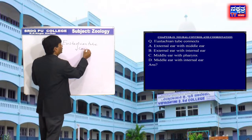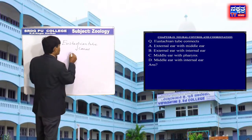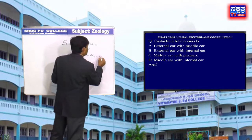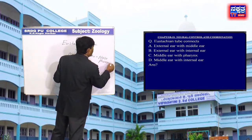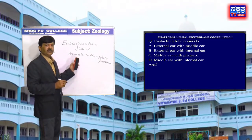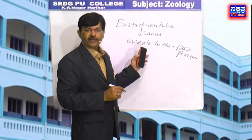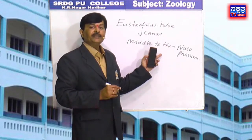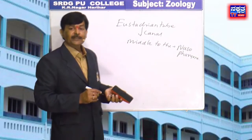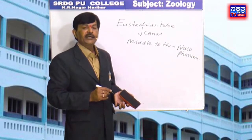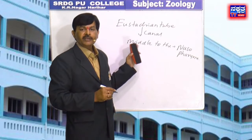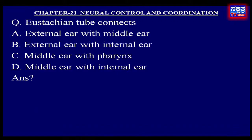The pharynx is divided into nasopharynx, oropharynx and laryngopharynx. The nasopharynx consists of the upper throat and the back of the nasal cavity. The Eustachian tube controls the pressure within the middle ear, making it equal with the air pressure outside the body. Therefore, in the given options, C — middle ear with pharynx — is the right answer.